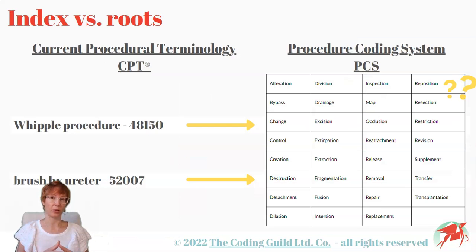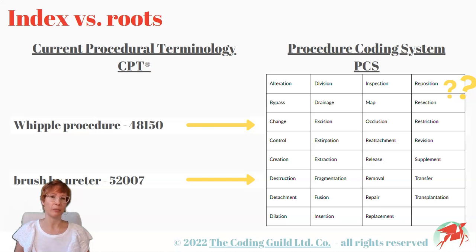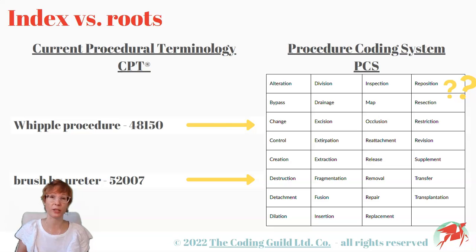A lot of people don't like PCS because it is perceived to be harder, and that might be the case in the beginning, as it needs a deeper understanding of surgical procedures. In CPT we can find an easy, quick answer if we are looking for a Whipple procedure, but in PCS the question is again: what's happening? We have to understand. The same goes for a brush biopsy of the ureter — in CPT we are given a code, but in PCS we have to know what's going on and build the code accordingly.